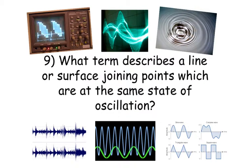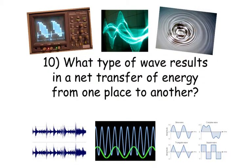Question 9. What term describes a line or surface joining points which are at the same state of oscillation? Number 10. What type of wave results in a net transfer of energy from one place to another?